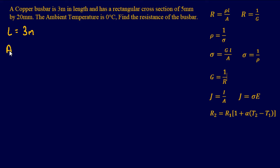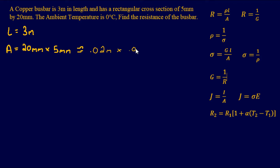Our area is 20 millimeters by 5 millimeters. Converting to meters, that's 0.02 meters by 0.005 meters. So our area comes out to be 1×10⁻⁴ meters squared.